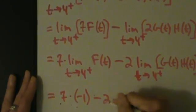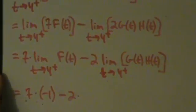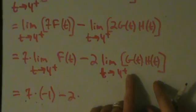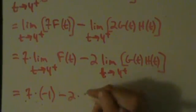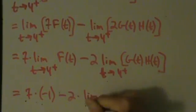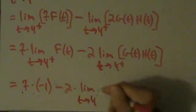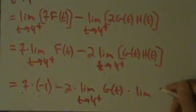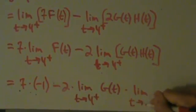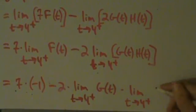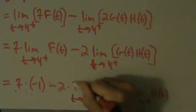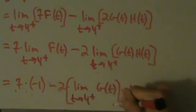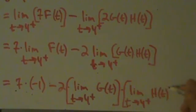And what we have is minus 2 times what? Well this limit of a product here, we can split that up as the product of 2 limits. So that's going to be 2 times limit as t goes to 4 from the right of G of t times limit as t goes to 4 from the right of H of t. And again, these square brackets here are totally not necessary, but they're not a bad idea because they help make things a little more clear.